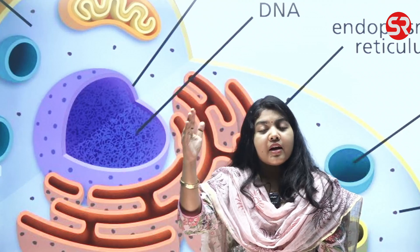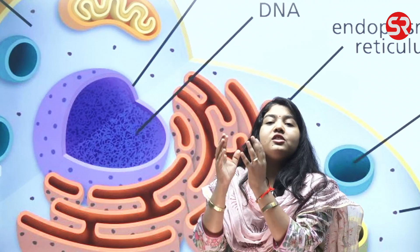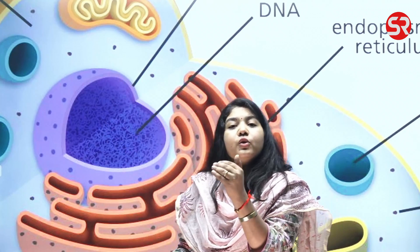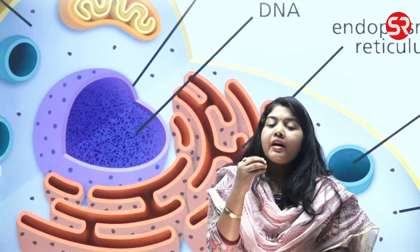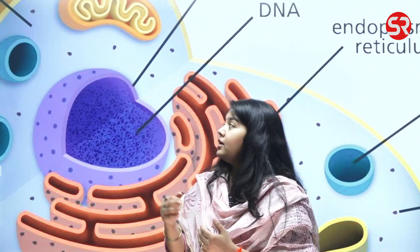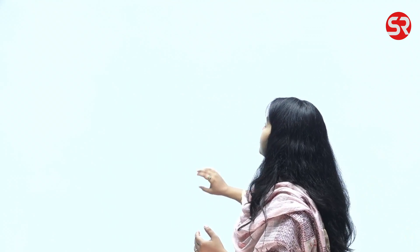So, to summarize: the cell membrane is the outer layer important for giving structure. The nucleus contains the genetic material and acts like the brain of the cell, giving commands. Within the nucleus, the chromatin material contains DNA, and DNA is a set of genes carrying genetic information.